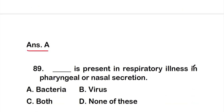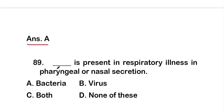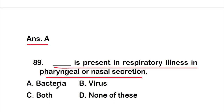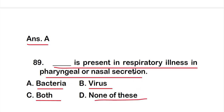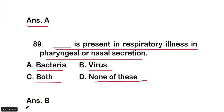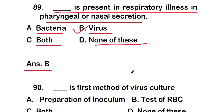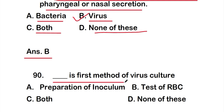Question number 89: blank is present in respiratory illness in pharyngeal or nasal secretions. Options are: option A, bacteria; option B, virus; option C, both; option D, none. The right answer is option B — virus is present in respiratory illness in pharyngeal or nasal secretions.